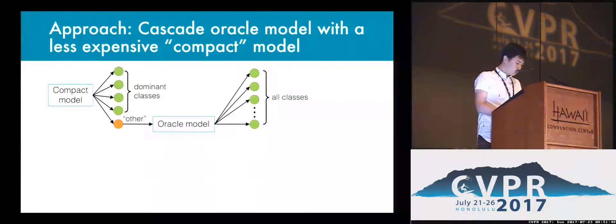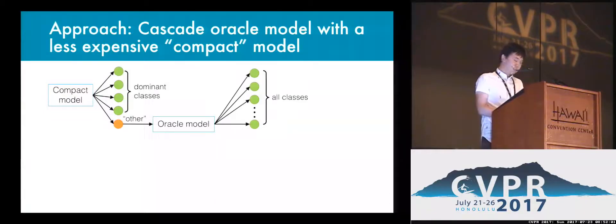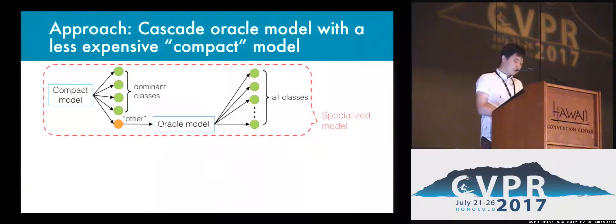So can we exploit temporal skew in a video to accelerate recognition speed while still achieving Oracle's accuracy? To exploit the skew, we propose an architecture that cascades a cheap classifier with the Oracle. First, a compound model recognizes the dominant classes in the video plus one other class. In most cases, only the compound model is executed to get the result. When the compound model predicts the input as other, we then execute the Oracle to recognize all classes. We call this entire structure a specialized model.